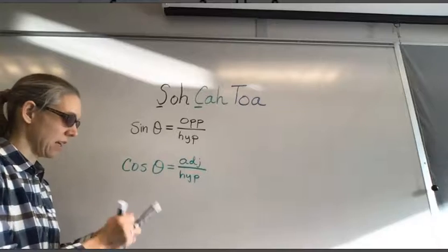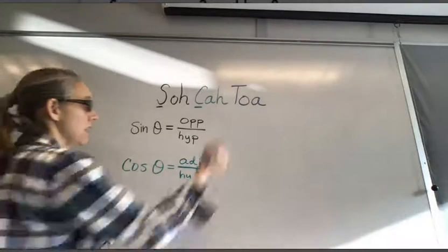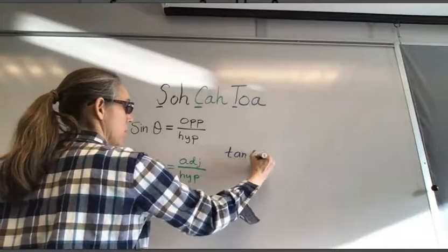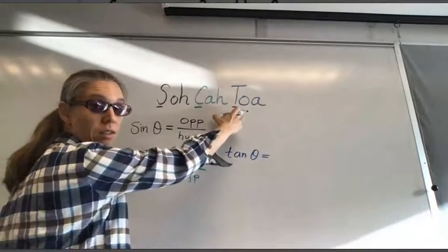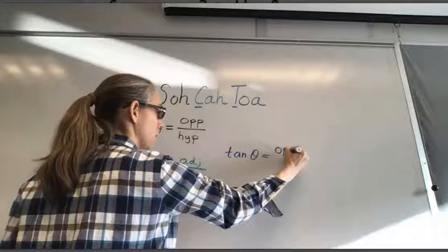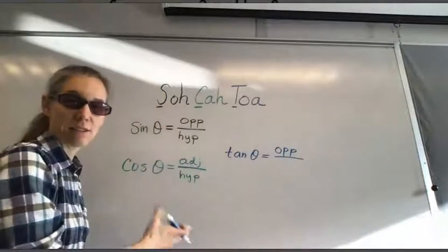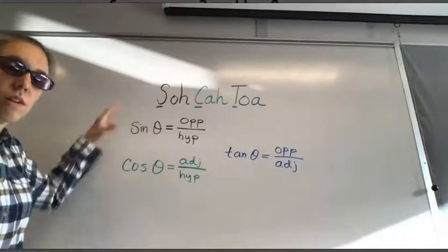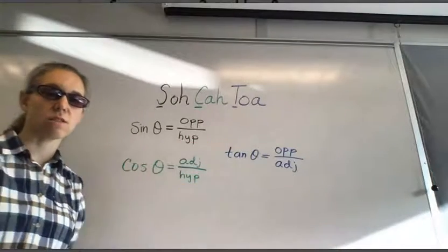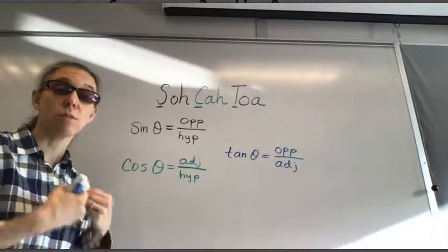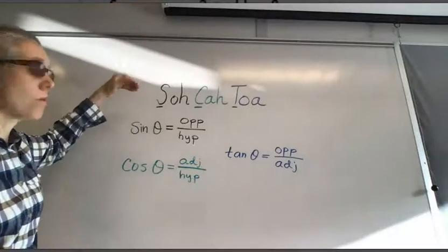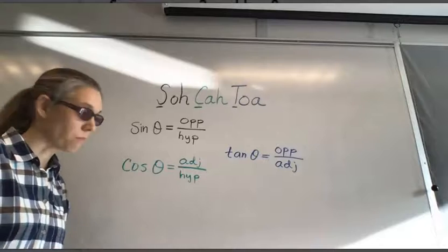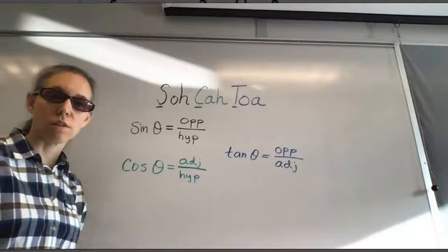Lastly, we get tangent from TOA. The T is for tangent, O is opposite, and A is adjacent. So you need to know sine, cosine, and tangent ratios by heart, and the easy way to remember them is through the word SOHCAHTOA.